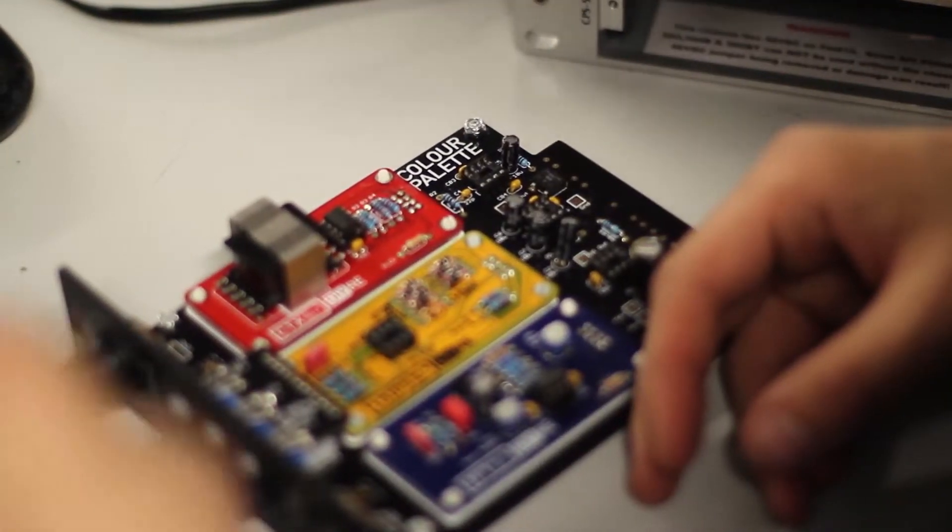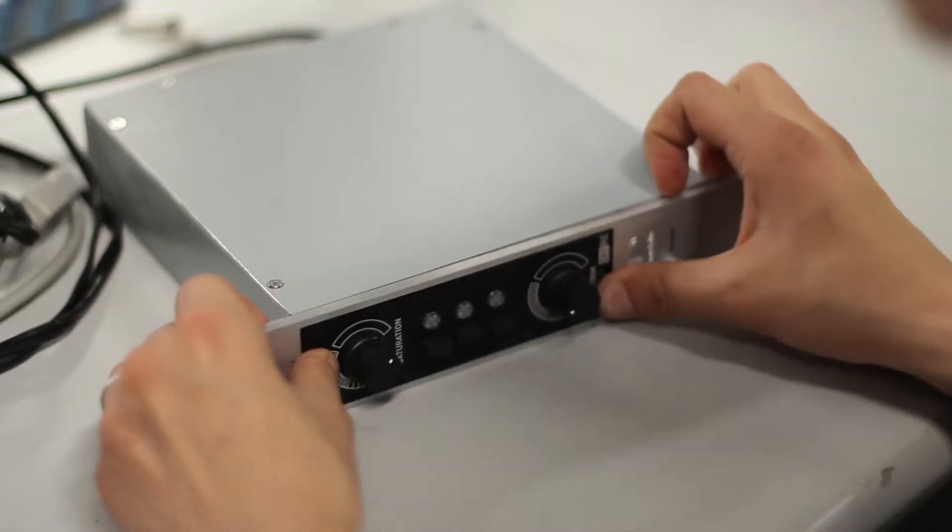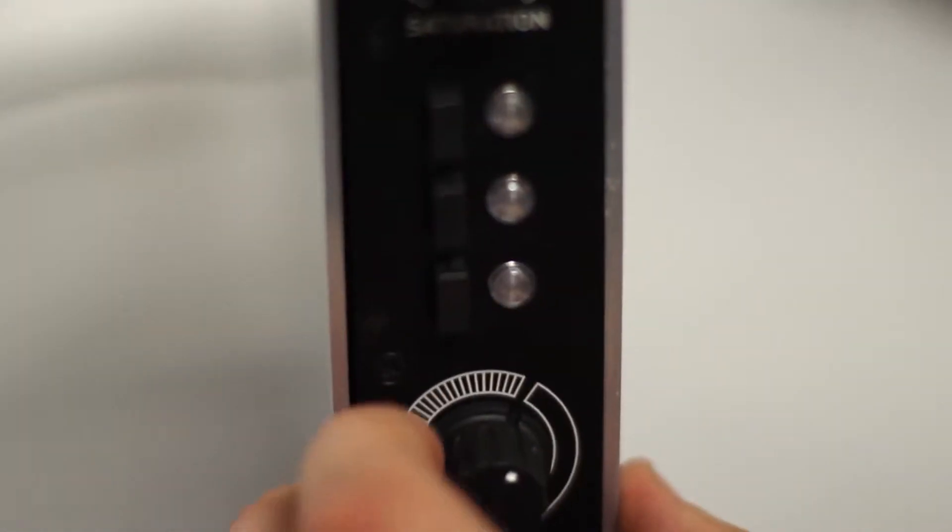Color is a way to actually recreate the same electronic circuits that created that big warm analog sound. But what we've done is distilled it down to some very small, very cost-effective modules that plug into our Color format.